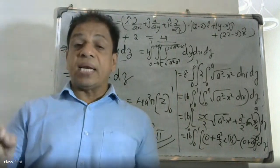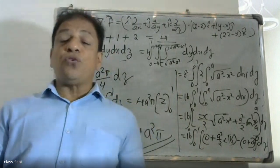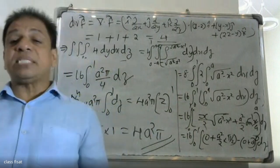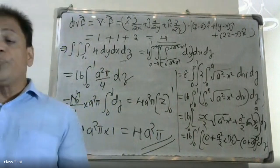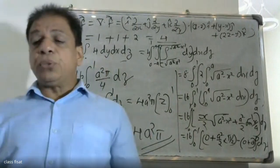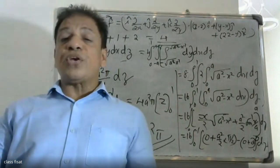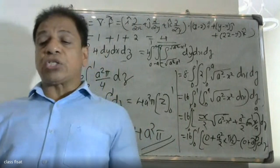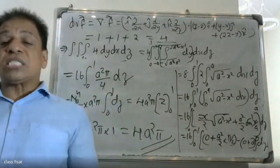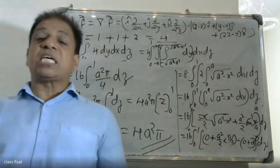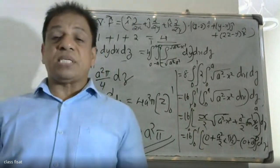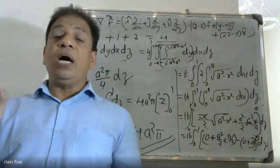The integration formula used: the integral of root of (s squared minus x squared) dx equals x over 2 times root of (s squared minus x squared) plus s squared over 2 times sine inverse of (x over s), plus constant.